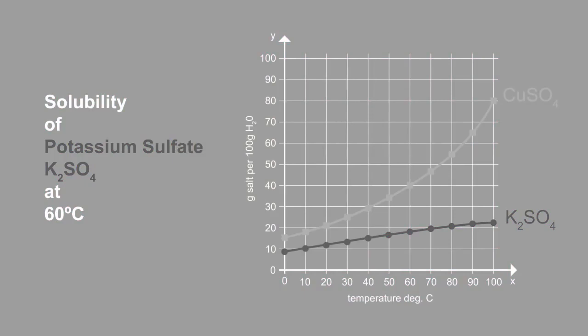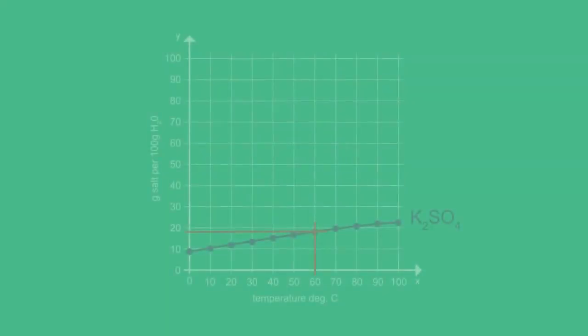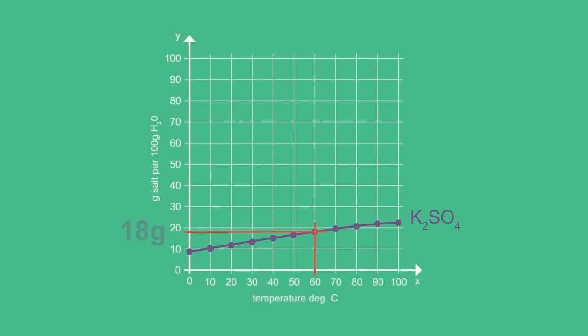Pause, try, and continue when ready. If your answer is around 18 grams of potassium sulfate per 100 grams of water, then you would be correct.